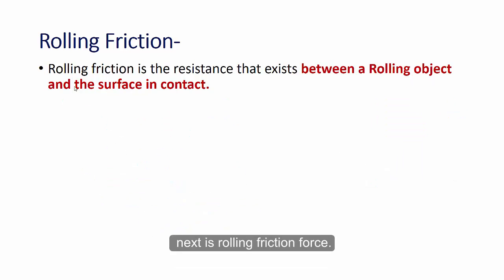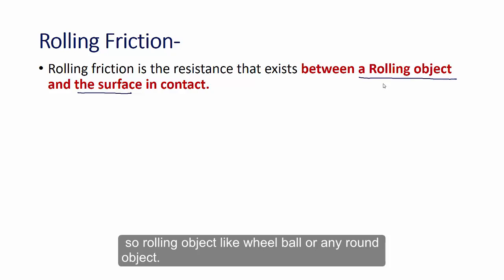Next is rolling friction force. Rolling friction force is the resistance force that exists between a rolling object and the surface in contact. So rolling object like wheel, ball or any round object.